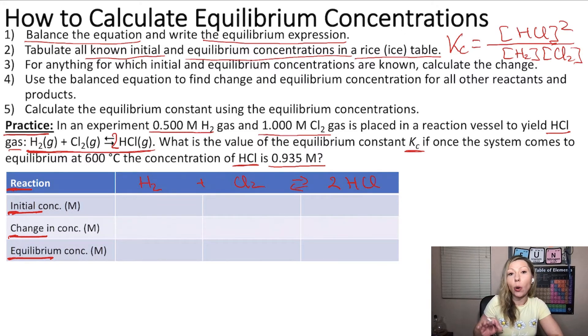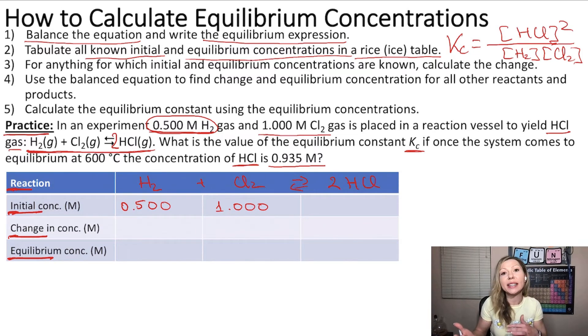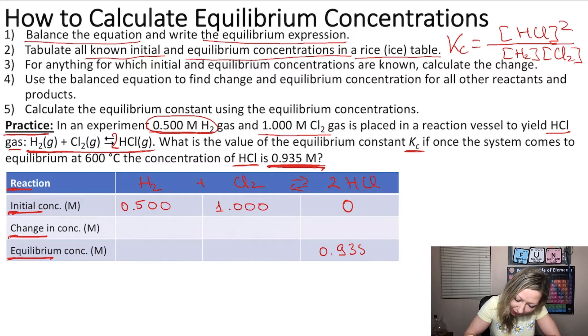Now we need to tabulate all the concentrations that we know. We know that we started with 0.5 mols of H2, and we had 1 mols per liter of Cl2. How much did we have of the product at the beginning? Zero. We didn't have any product at the beginning of the reaction. And we also know that in equilibrium, we had 0.935 mols per liter of HCl.